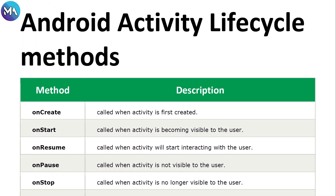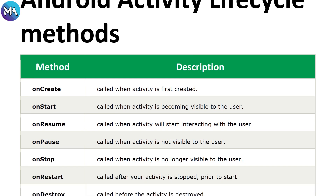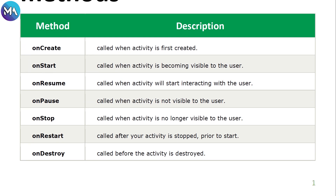The seven lifecycle methods of activity describe how an activity will behave at different states. The first method is onCreate — it is called when the activity is first created. We will see in the next couple of minutes how Android Studio works with these methods and at what stage each one is called.